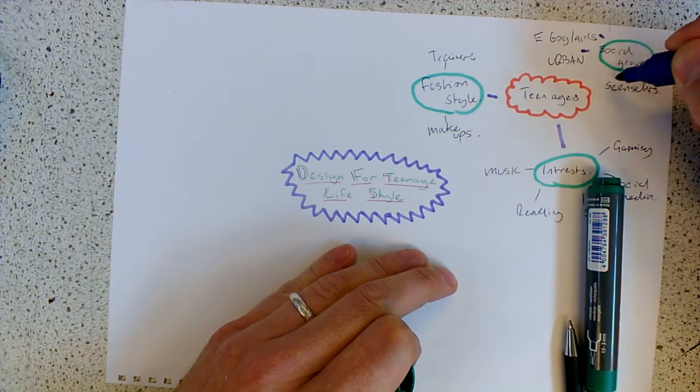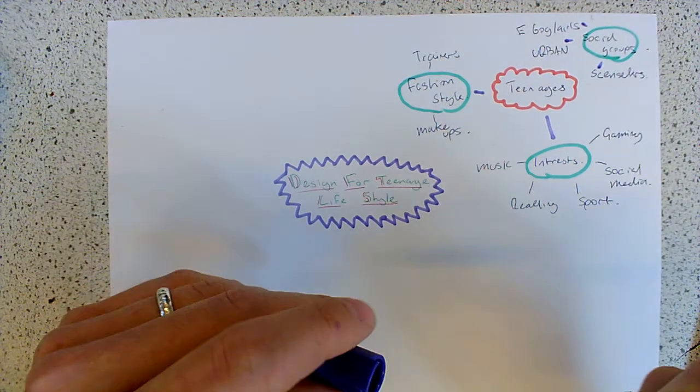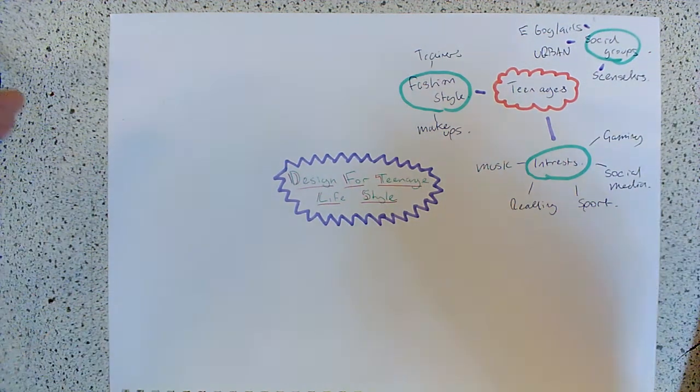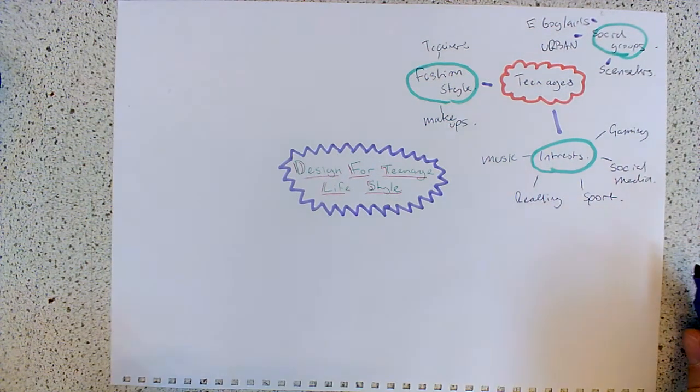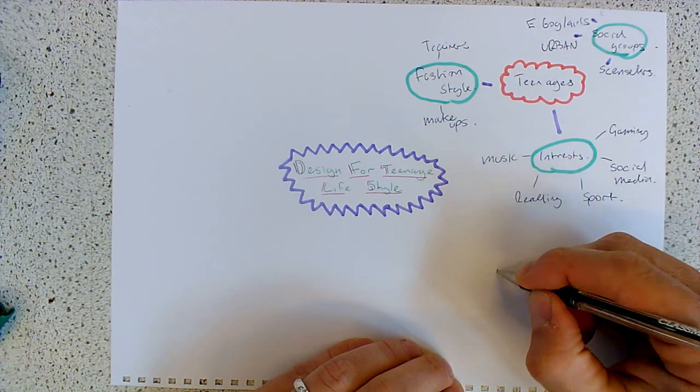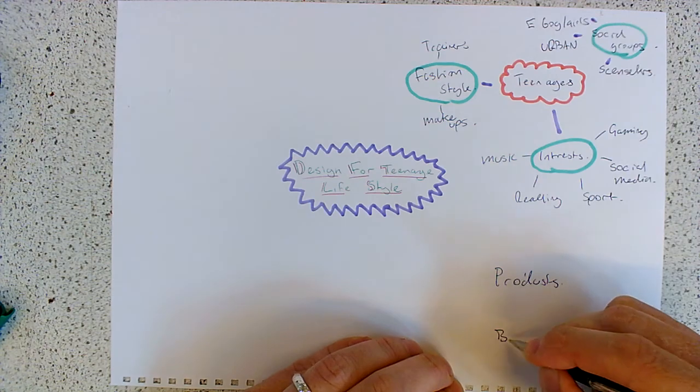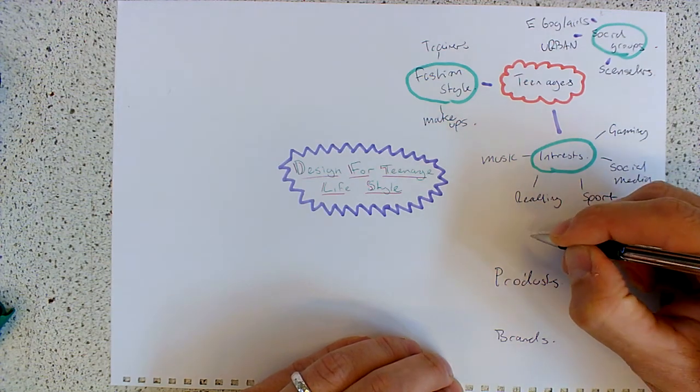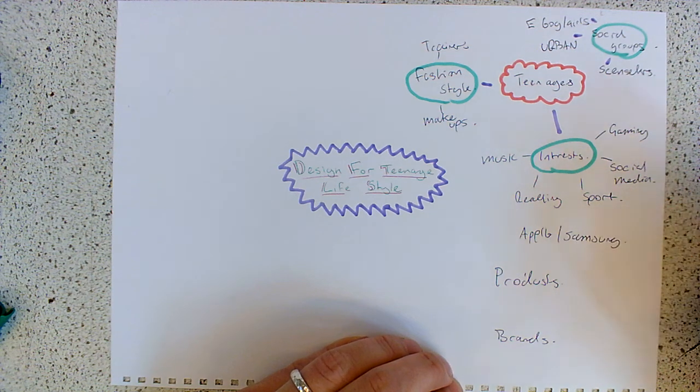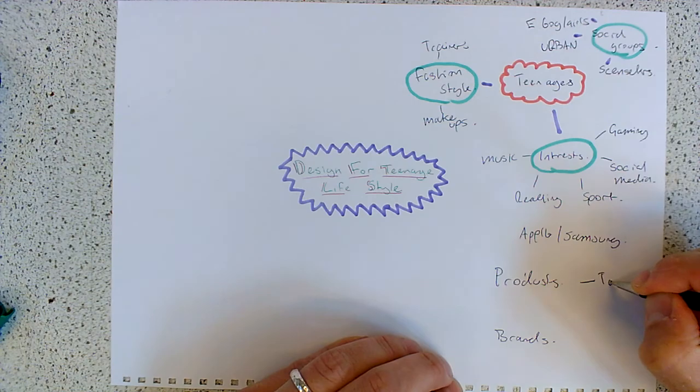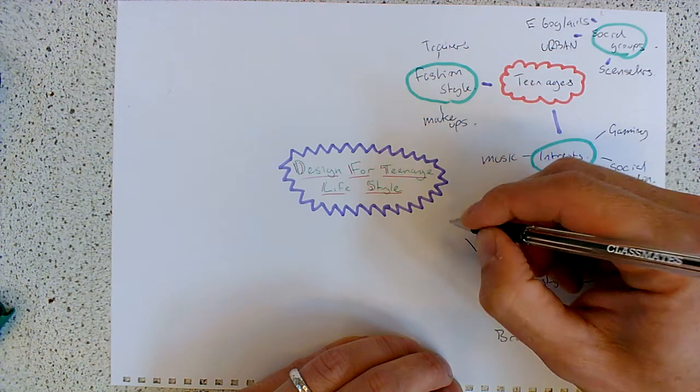Other things you could think about is products that young people interact with and purchase. So you could think about brands that are very popular, products like Apple, Samsung or whatever, who goes for them, why are they popular, other products like tablets and stuff like that.